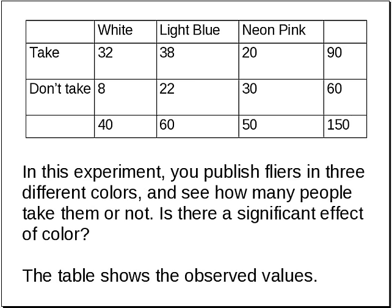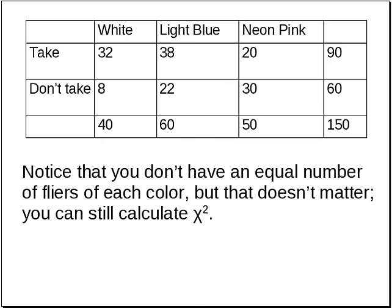Here's another experiment. In this experiment, you publish flyers in three different colors and see how many people take them or don't take them. Notice that you don't have an equal number of flyers of each color, but that doesn't matter — you can still calculate chi-squared.